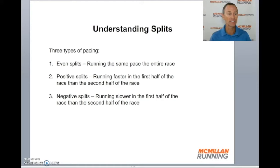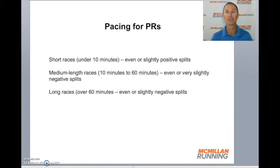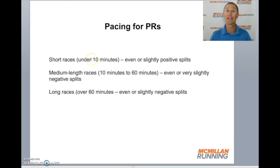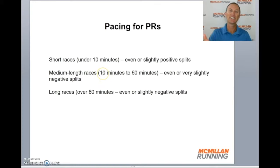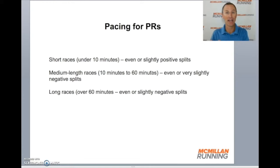All of these splits have their place in proper pacing. Looking across different race distances, there are different strategies that yield the fastest racing. For short races under 10 minutes, even or even slightly positive splits result in the best races — in fact, world record 800-meter races are often run faster in the first 400 than the second. For medium-length races, roughly 10 minutes to an hour — think 5K to 10K for most of us — even or slightly negative splits yield the best performance.